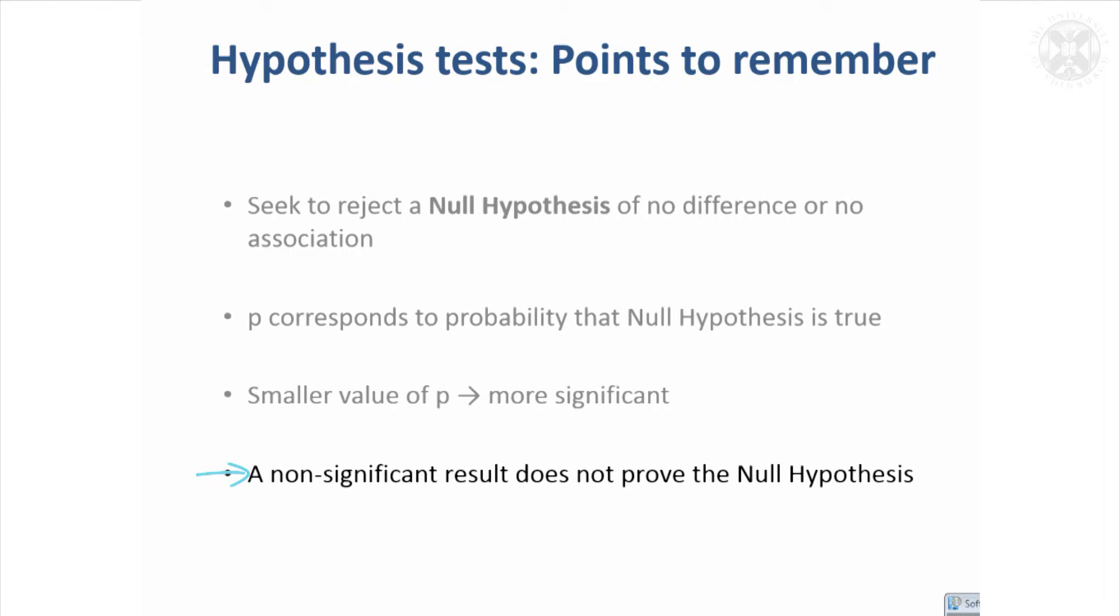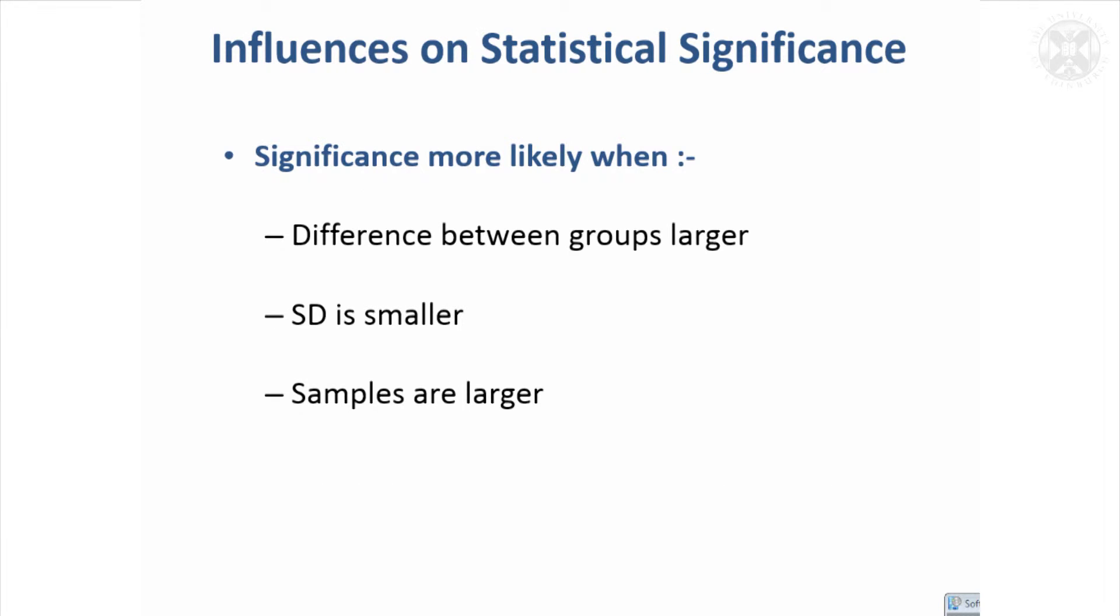Don't automatically assume that a non-significant result proves the null hypothesis, proves that your groups are the same. So what are the influences on statistical significance? It's more likely when the difference - of course, if you've got a big difference between the groups, as we had between those case carves and the normal carves - then you're going to get more likely to have significance.